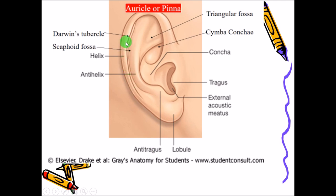Going above, the upper part is made up of elastic tissue. This is called the helix and this is called the antihelix. In between there is a small space called the scaphoid fossa. On the helix there is a small elevation called Darwin's tubercle. In the front, this is called the triangular fossa, and here there is a concha called the cymba concha.